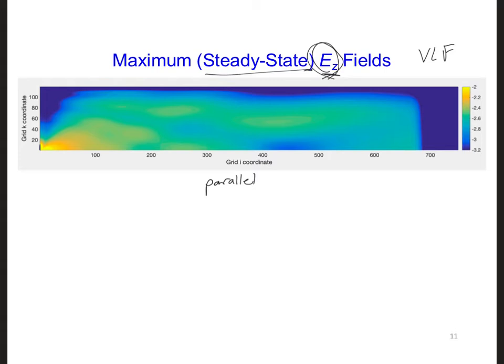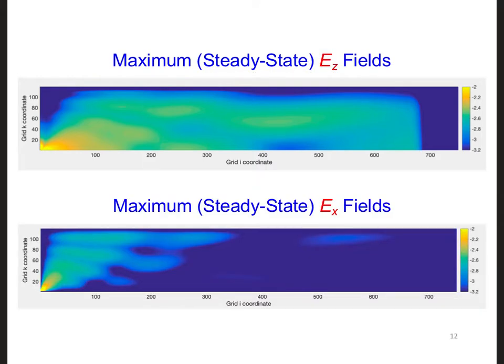Previously we didn't plot the other field components, but we could. For example, here is a plot of the steady state horizontal electric fields, Ex, from the same simulation.